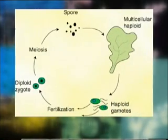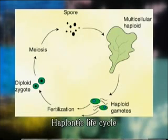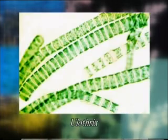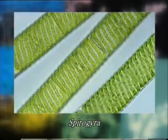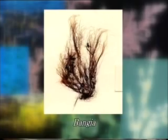When we talk about the haplontic life cycle, this type of life cycle is encountered in the majority of Chlorophyceae or green algae such as Chlamydomonas, Oedogonium, Spirogyra and Ulothrix. It is also found in some members of Rhodophyceae such as Bangia.